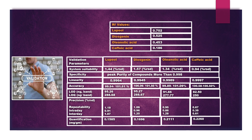The correlation coefficients were: lupeol 0.9964, diosgenin 0.9945, oleanolic acid 0.9989, and caffeic acid 0.9997. The percentage RSD of the system suitability and precision was found less than 2%. Accuracy was determined using the standard addition method.